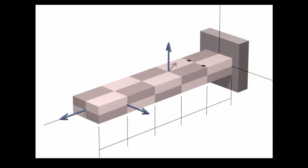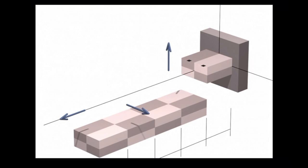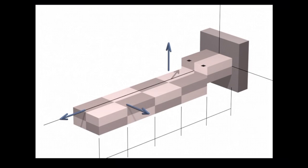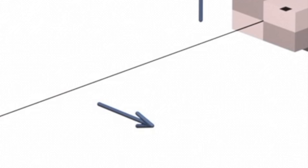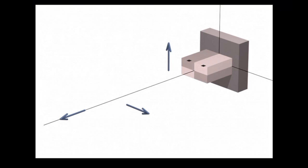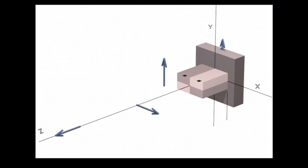We have three forces. The first step would be cutting the section at the point of interest, like that. Once we cut that, we would have three forces. We need to move all these forces one by one to the center of that cut section. First, let's move Px. There will be two moves. One move would be moving that along its axis, which doesn't cause any moment. But if I move that along this axis, it causes a moment.